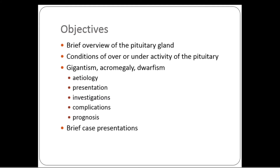Our objectives today are to describe the overview of the pituitary gland in terms of function, anatomy, and location. We will then go over the conditions of over or under activity of the pituitary. Some of the things we will talk about include gigantism and acromegaly, which involve over-secretion of the hormones of the pituitary.